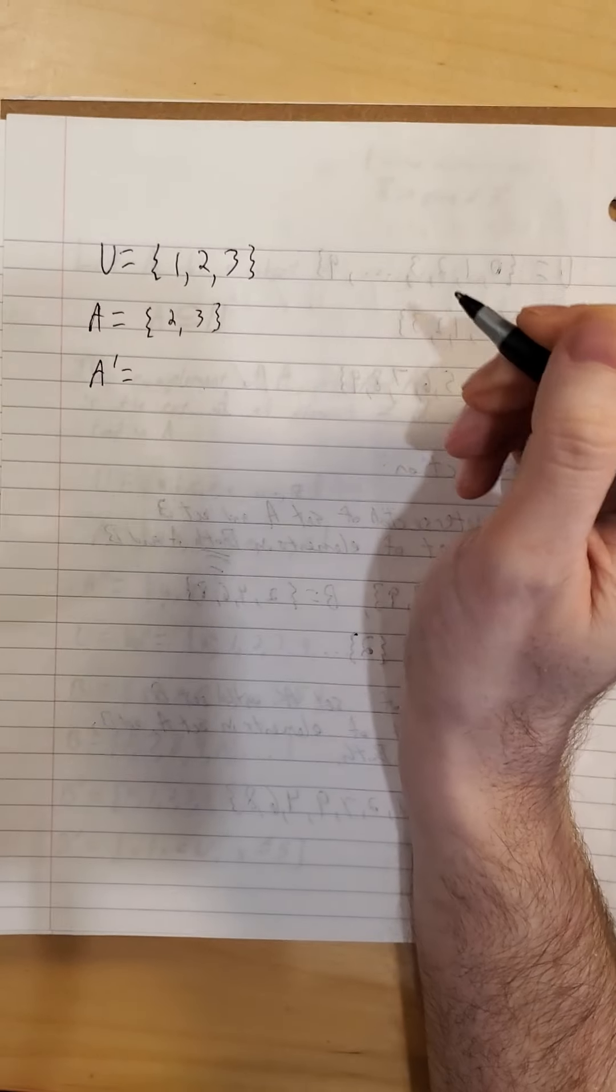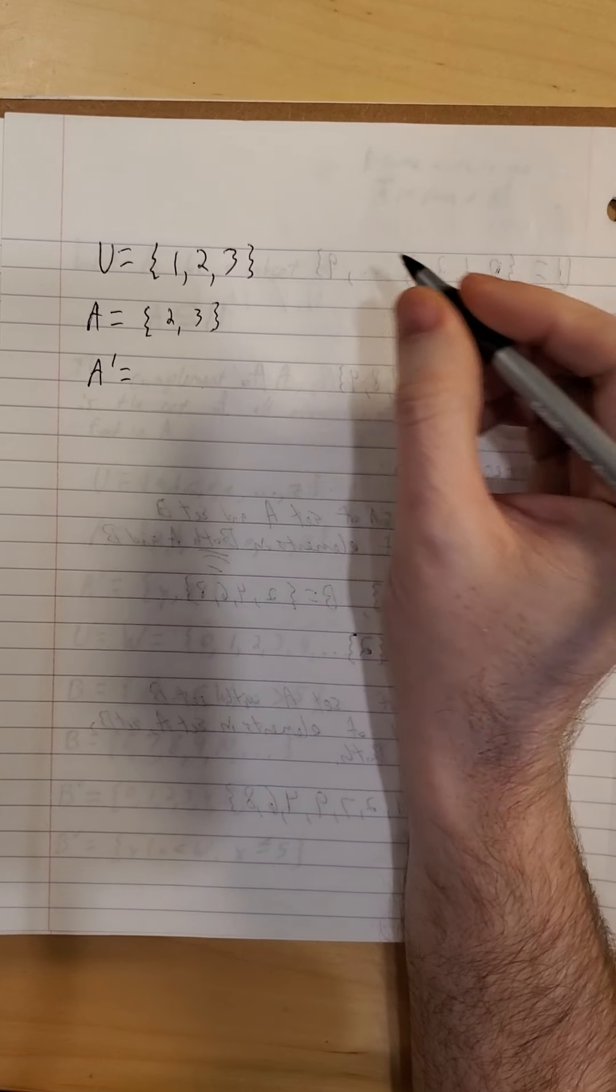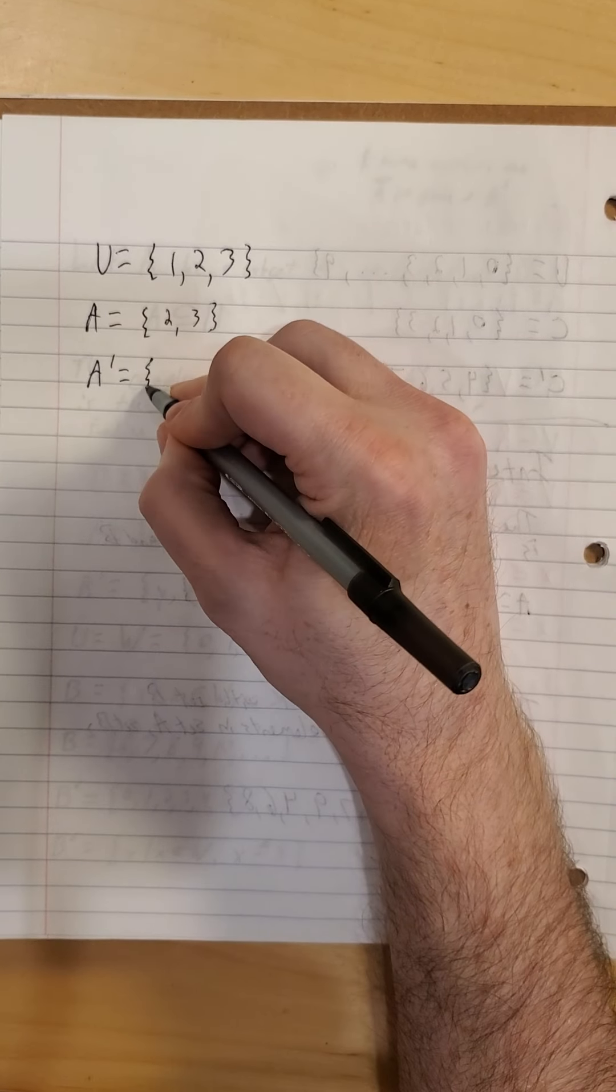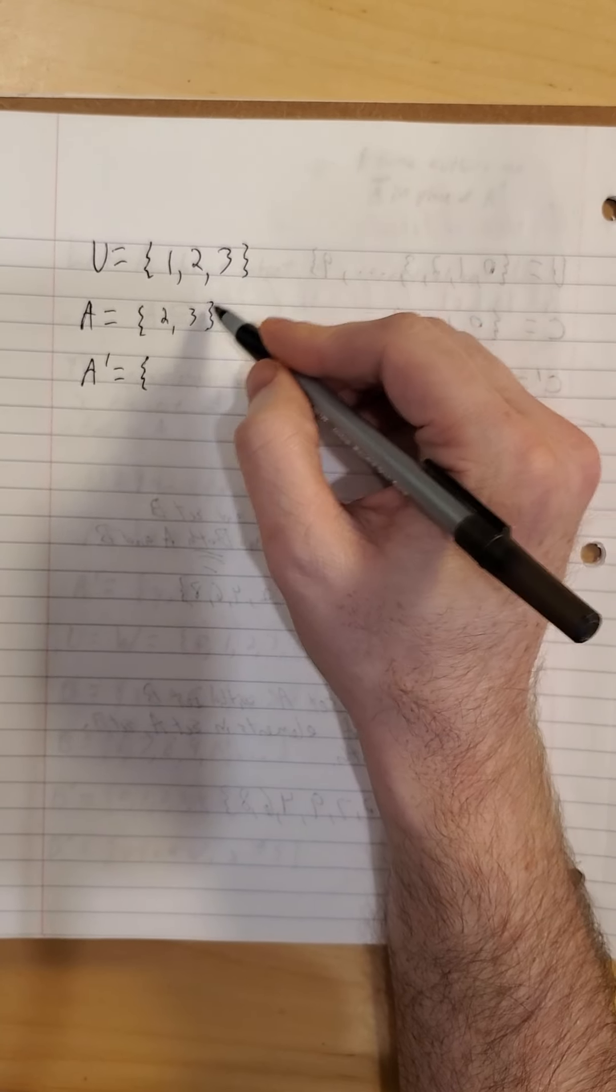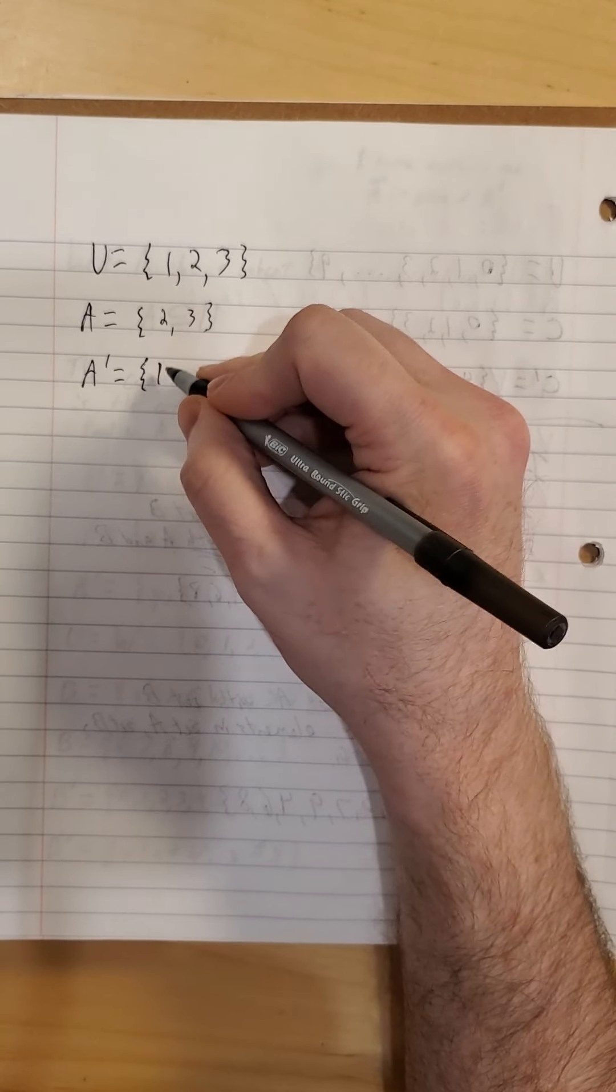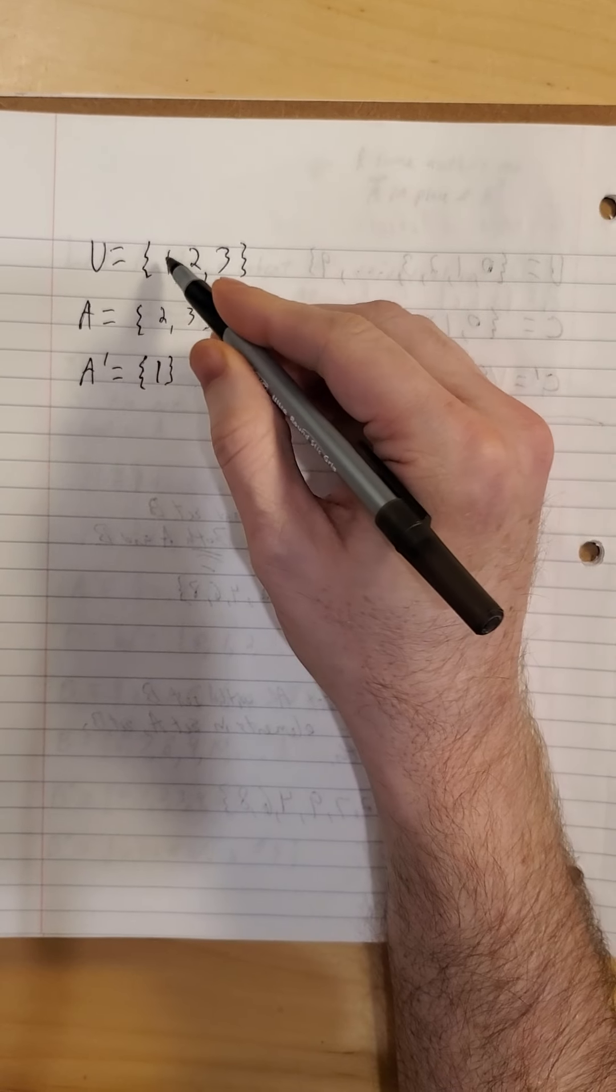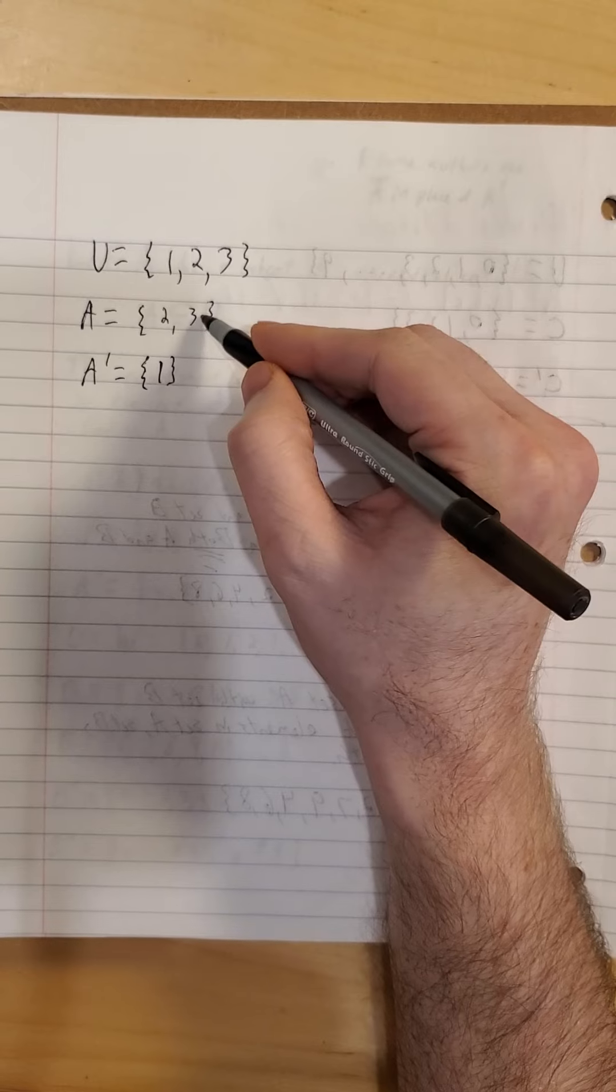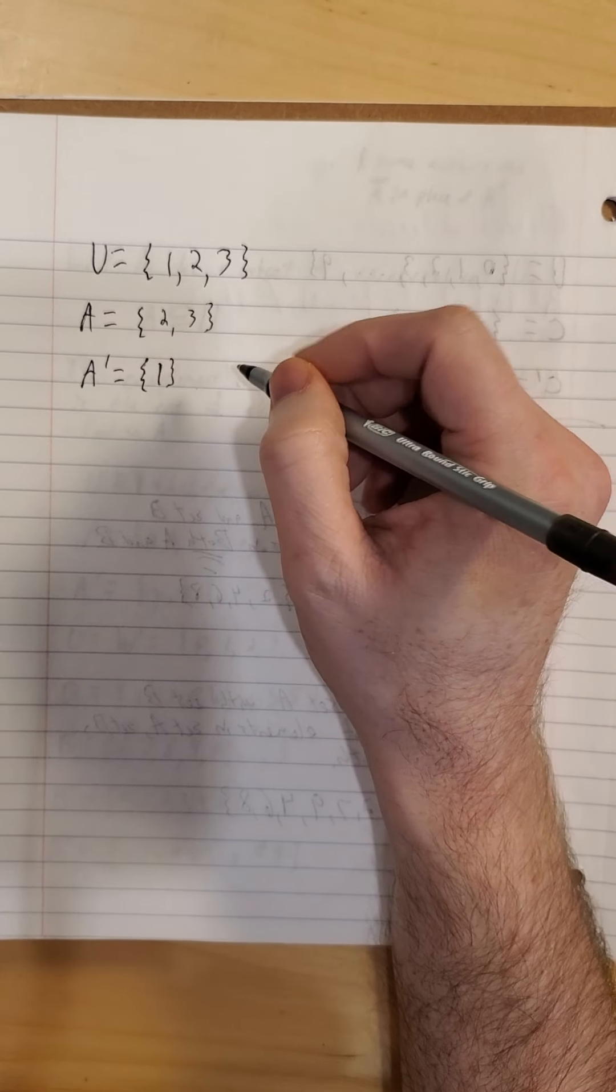Set A will contain elements 2 and 3. What would A complement contain? So hopefully you figured out that that contains only 1. So anything in the universal set not covered by set A would be the complement of A.